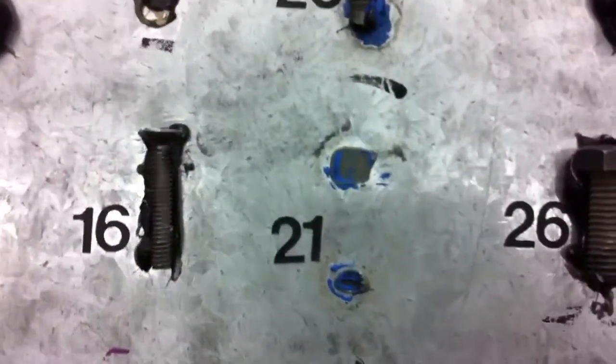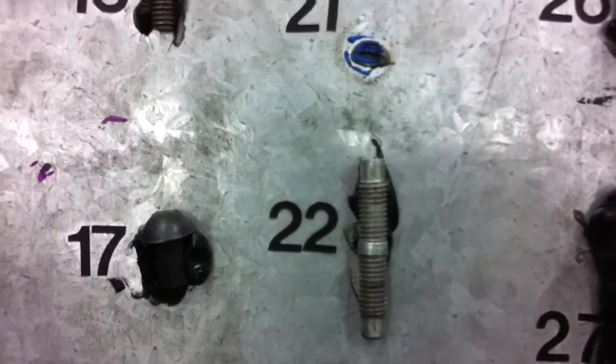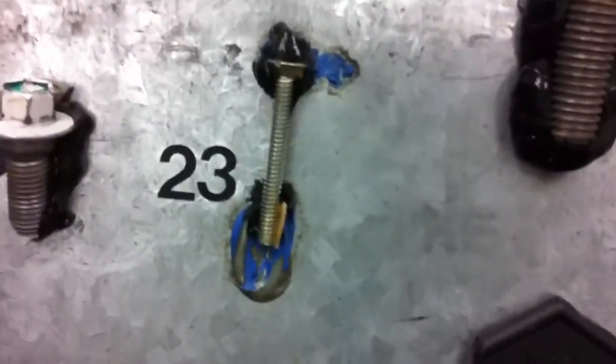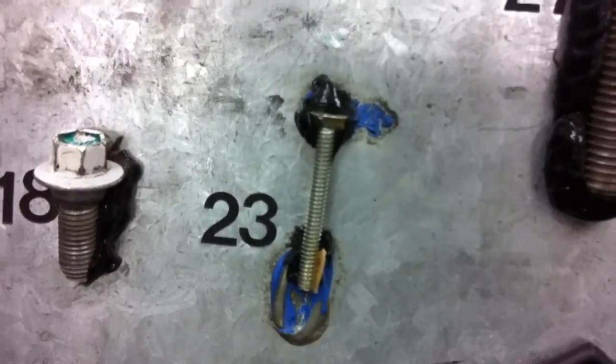Number twenty-one is a hex bolt. It's missing. Number twenty-two, stud. Number twenty-three is a countersunk plow bolt.